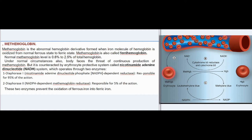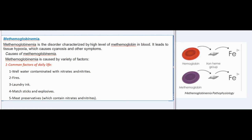This is counteracted by the erythrocyte protective system called the NADH system, which operates through two enzymes: (1) diaphorase I — NADPH-dependent reductase, responsible for 95% of the action; (2) diaphorase II — NADPH-dependent methemoglobin reductase, responsible for 5% of the action. These two enzymes prevent the oxidation of ferrous iron into ferric iron.